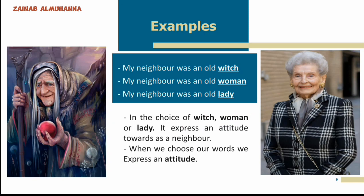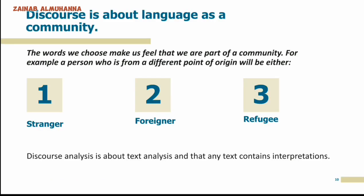Here we have an example about text. In this choice of 'witch,' 'woman,' or 'lady,' it expresses an attitude towards a neighbor. When we choose our word, we express an attitude. Discourse is about language as a community — the words we choose make us feel that we are part of a community. For example, a person from a different place of origin will be called either 'stranger,' 'foreigner,' or 'refugee.' So discourse analysis is about text analysis, and any text contains interpretations.